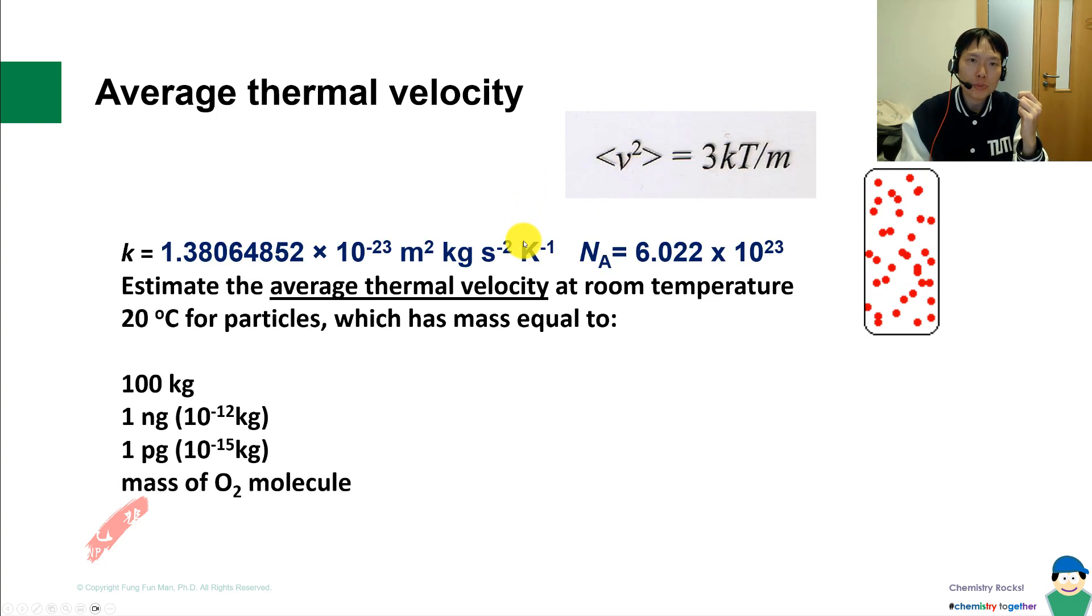Now let's look at average thermal energy. Molecules are always moving with velocity, giving us kinetic energy. I'd like to show you one example, but first, here's a question to attempt. Given the Boltzmann constant and Avogadro's constant, estimate the average thermal velocity at room temperature, 20 degrees Celsius, for particles with masses equal to 100 kg, 1 nanogram, 1 picogram, and the mass of an O2 molecule. Give it a try.